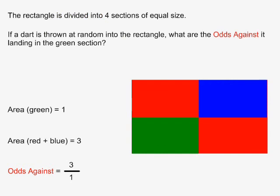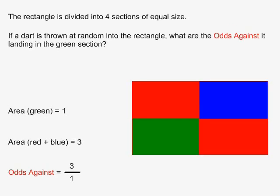This is a dart game where we throw the dart at a colored target. The target is shaped like a rectangle, which is divided into 4 smaller rectangles of equal size. If a dart is thrown at random into the target, what are the odds against it landing in the green section? We don't know the area of the green section, but if we assume it is equal to 1, then we know that the areas of the red and blue sections combined are 3 times as big, and we can say that they are equal to 3. Odds against is equal to the area of the non-green sections over the area of the green section, which is equal to 3 over 1.